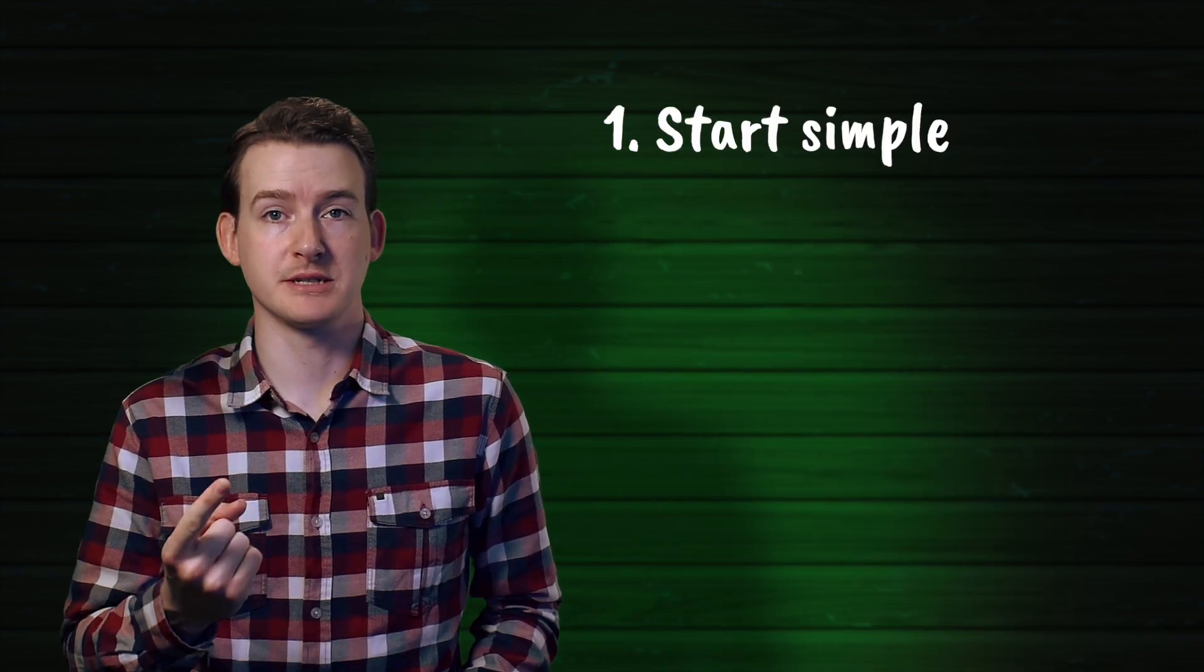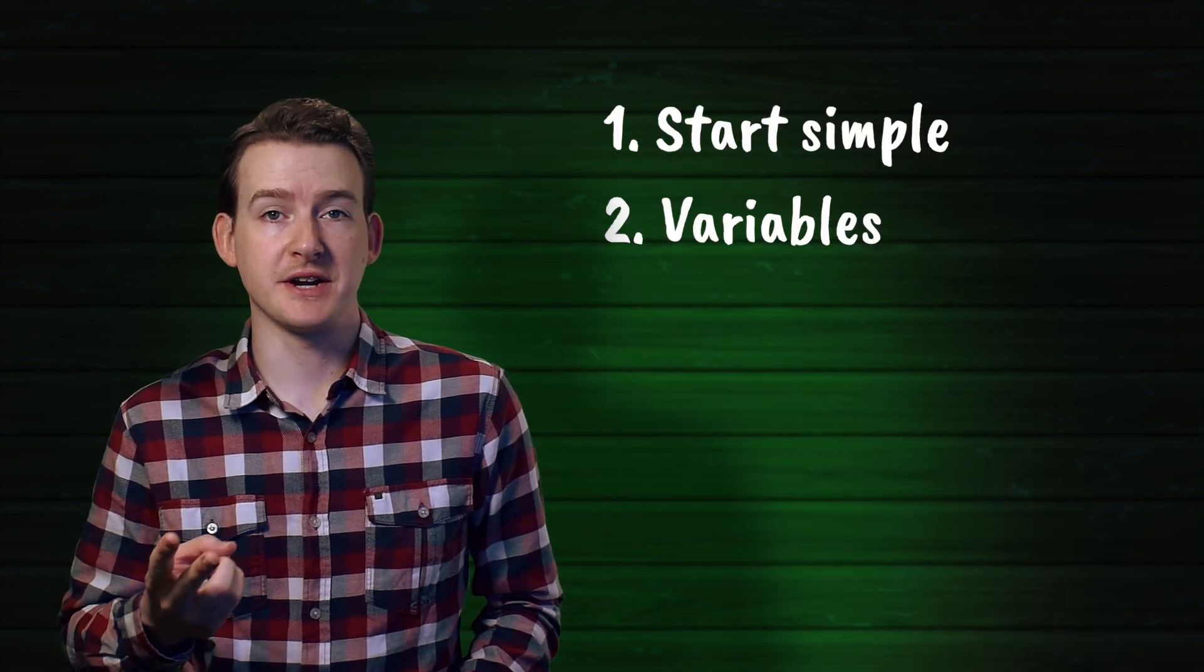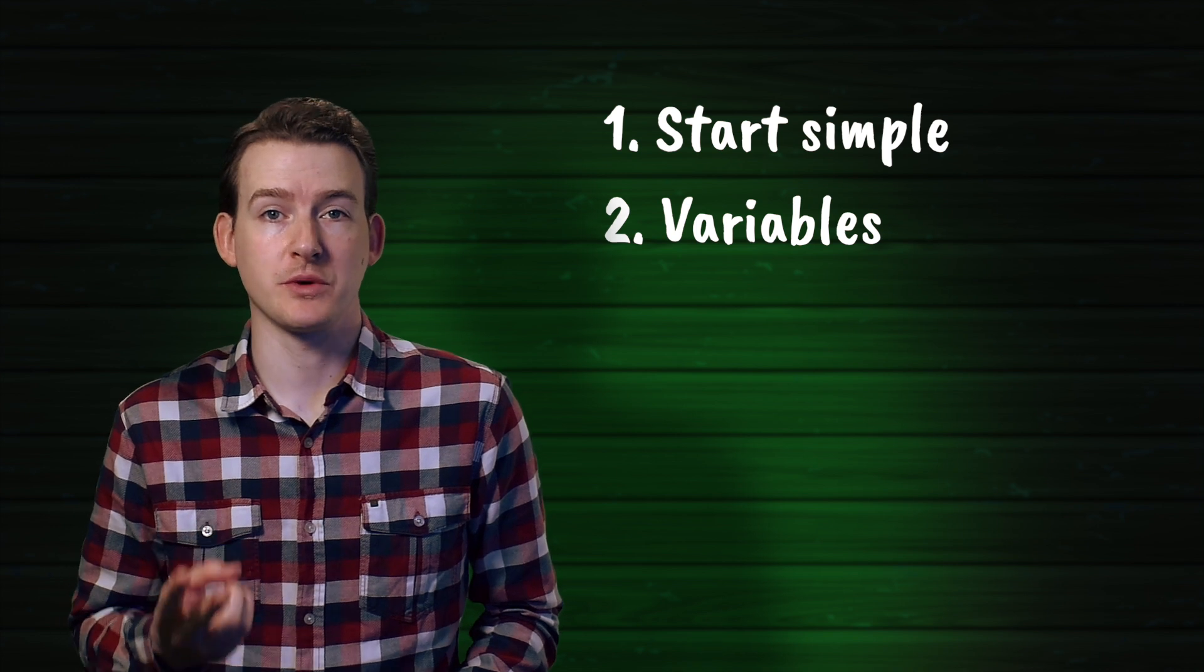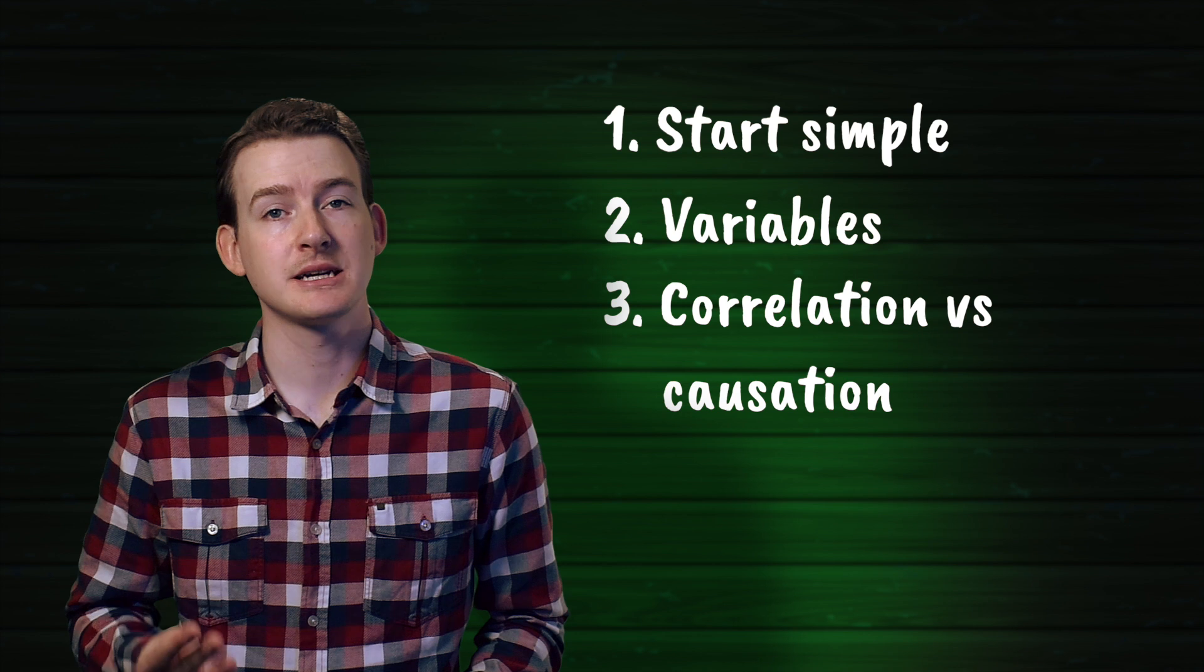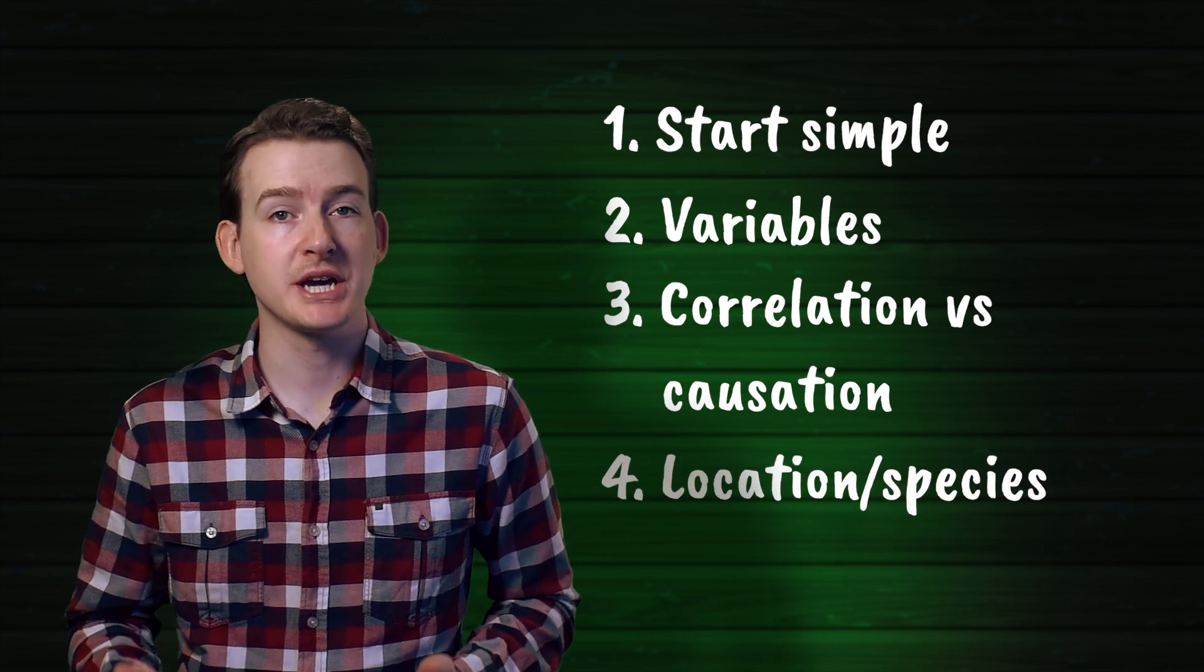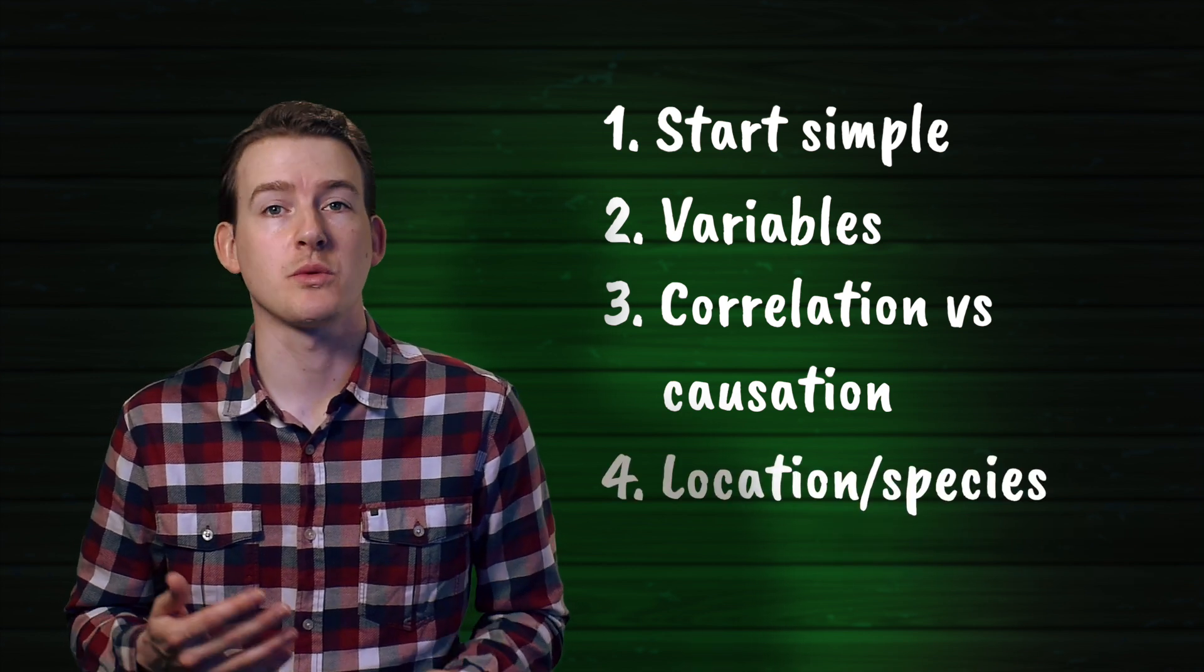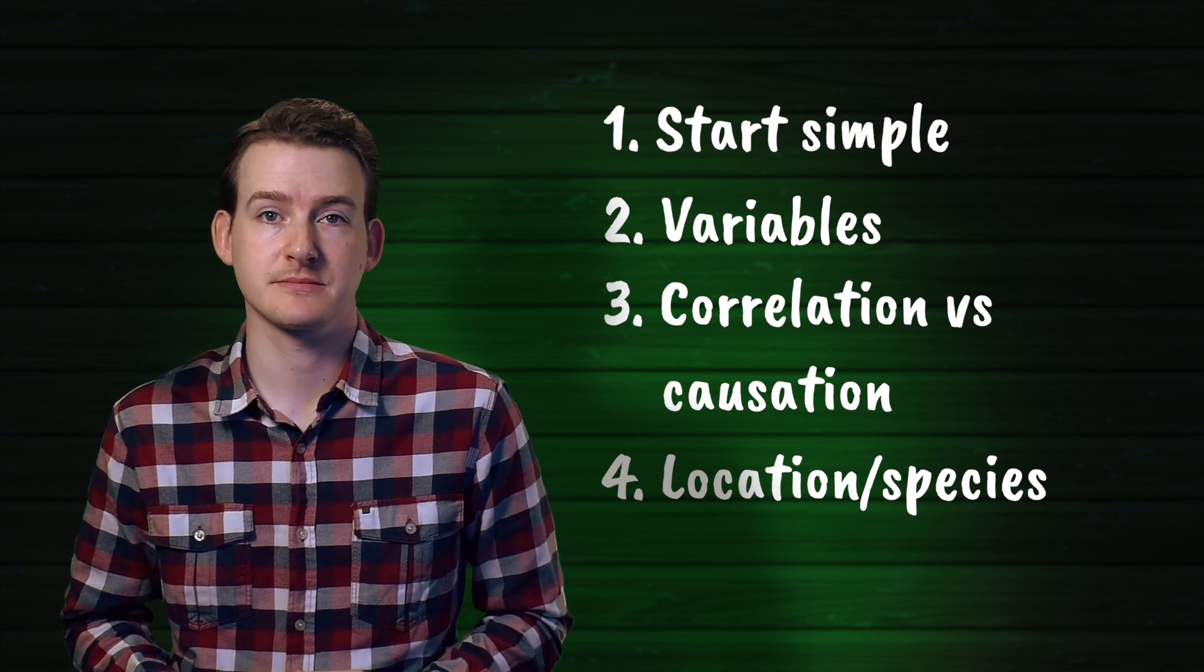So to write a really good research question, you've got to be mindful of four things. First of all, start simple. Second, consider your variables and make sure they're very obvious from the question. Be mindful of correlation versus causation. And be specific by mentioning a location and or a species or whatever details are relevant to your assignment.